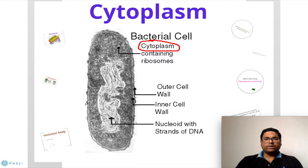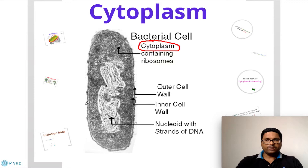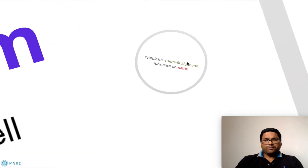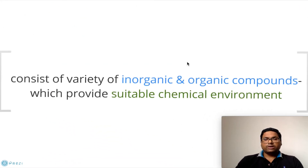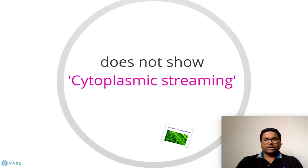Hi everyone, this is Vishal Bhair. We will continue our discussion of prokaryotic cell structure with our next topic: cytoplasm. As you can see from the diagram, it is a granulated liquid part inside the prokaryotic cell. It is actually a semi-fluid ground substance, or matrix, consisting of different types of inorganic and organic compounds which provide a suitable chemical environment for the cell to survive.